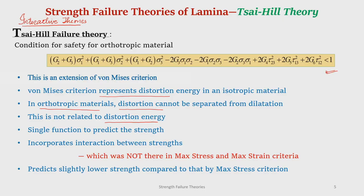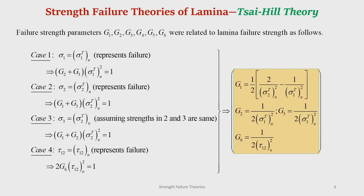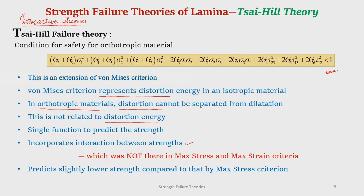Unlike maximum stress and maximum strain criteria which have around five different sub-criteria, here a single function predicts the strength. If this expression equals one, the lamina fails; if less than one, it is safe. More importantly, it incorporates interaction between the strengths, which was not present in maximum stress and maximum strain criteria. However, the strength predicted is slightly lower compared to that by maximum stress and strain criteria.